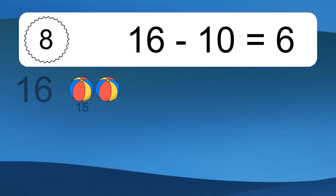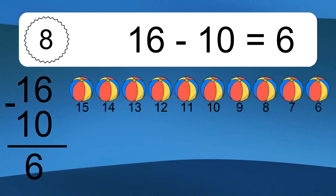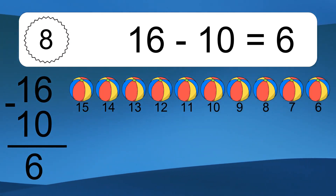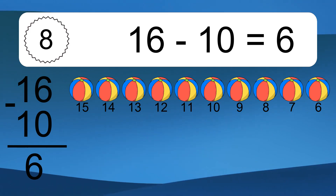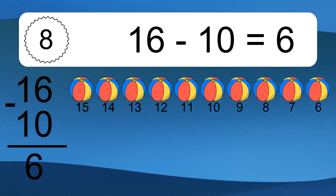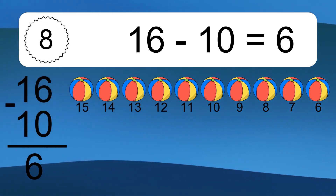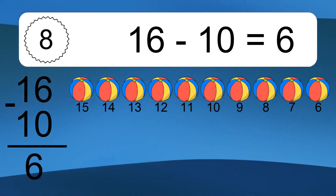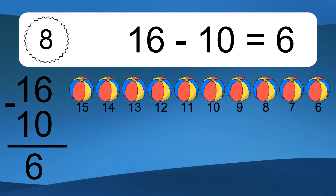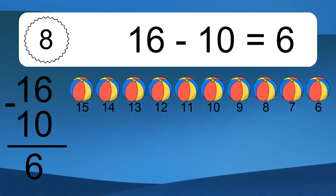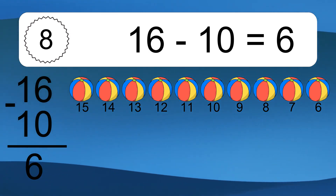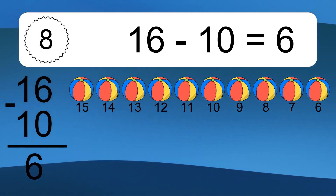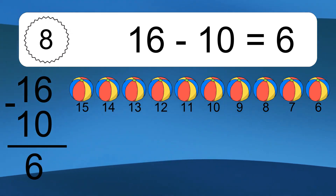16 minus 10 equals what? 16 minus 10 equals 6. Let's count it: 15, 14, 13, 12, 11, 10, 9, 8, 7, 6.